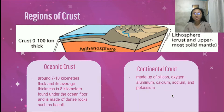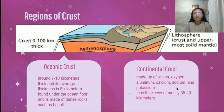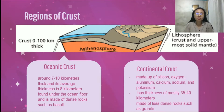On the other hand, the continental crust is made up of silicon, oxygen, aluminum, calcium, sodium, and potassium. It has a thickness of mostly 35 to 40 kilometers. The continental crust is thicker compared to the oceanic crust, having 35 to 40 kilometers, while oceanic crust has only 7 to 10 kilometers. But it is made of less dense rocks such as granite. So continental crust has lesser density compared to oceanic crust, while oceanic crust has a higher density because of its dense basaltic rocks.